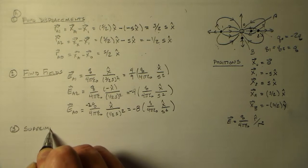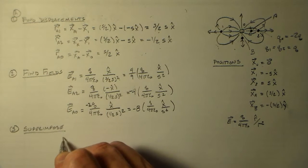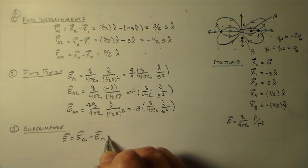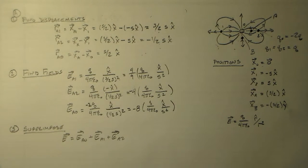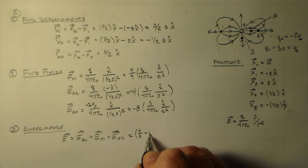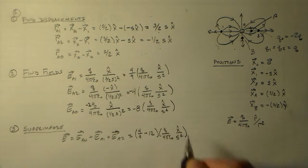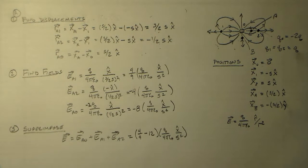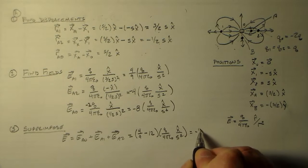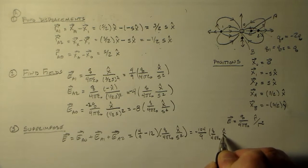So we superimpose, we said. Superimposing fields means we just add them up - at any particular point we just add up all the fields. And so we have E is equal to Ea0 plus Ea1 plus Ea2, right? And that is going to equal 4 ninths minus 12 q over 4 pi epsilon not x over s squared.